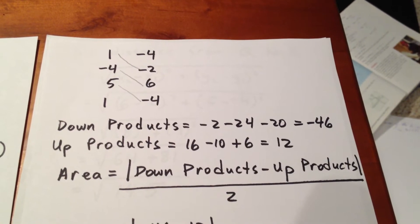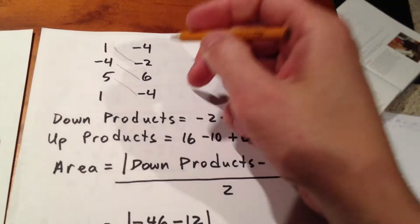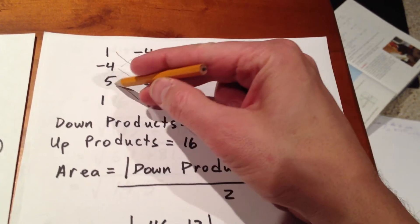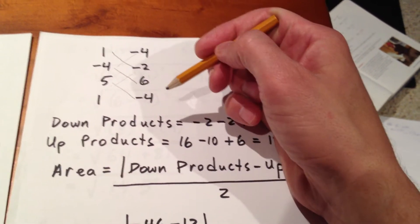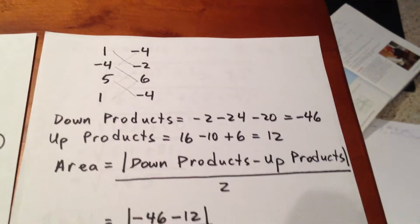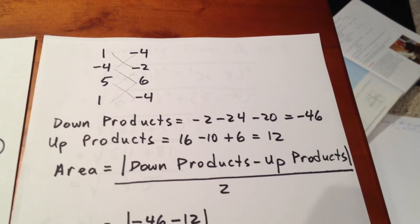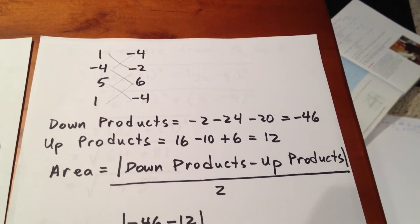Now, we consider our up products. Negative 4 times negative 4 is 16. 5 times negative 2 is negative 10. 1 times 6 is 6. So our up products are negative 16, negative 10, and 6. Adding those together gets us 12.